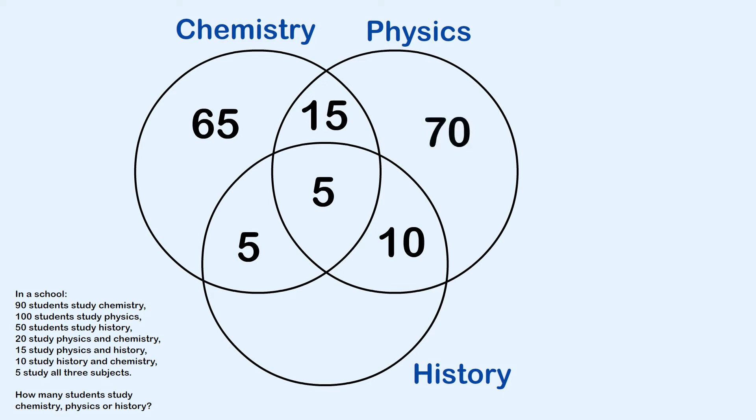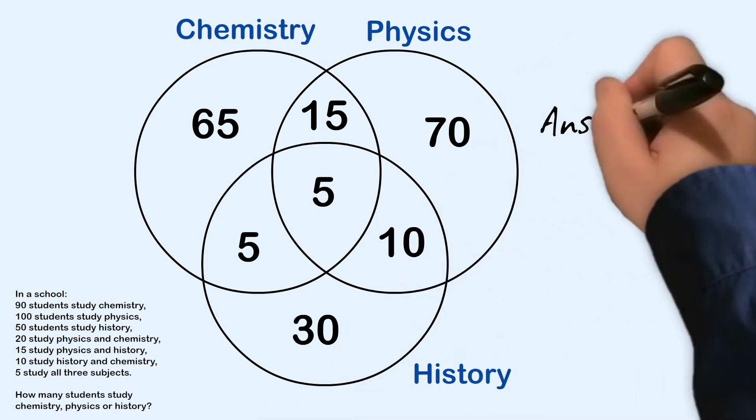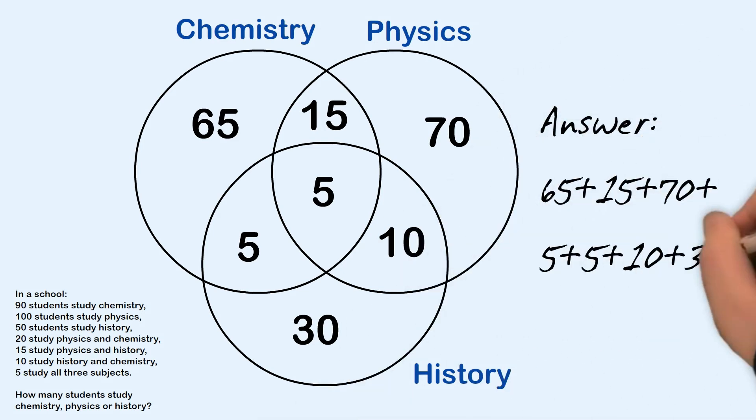Then same sort of thinking, we can write 70 for physics and 30 for history. So that makes 200 in total, so the answer is 200.